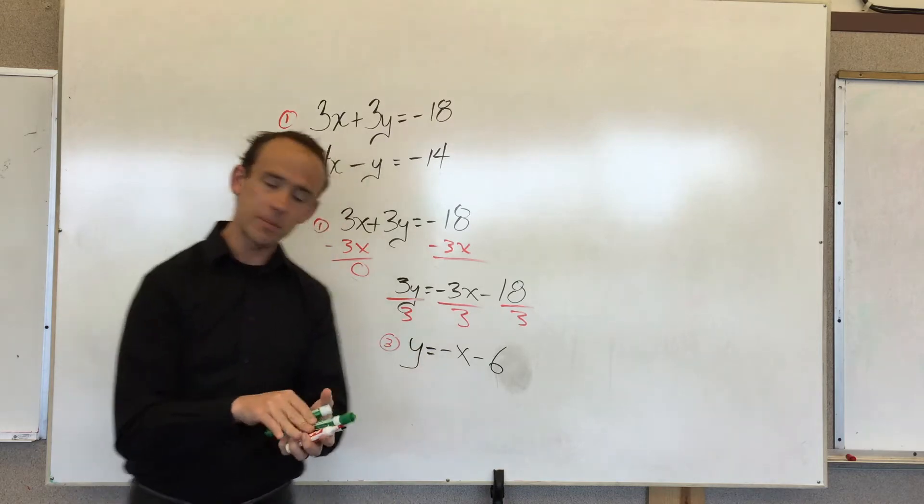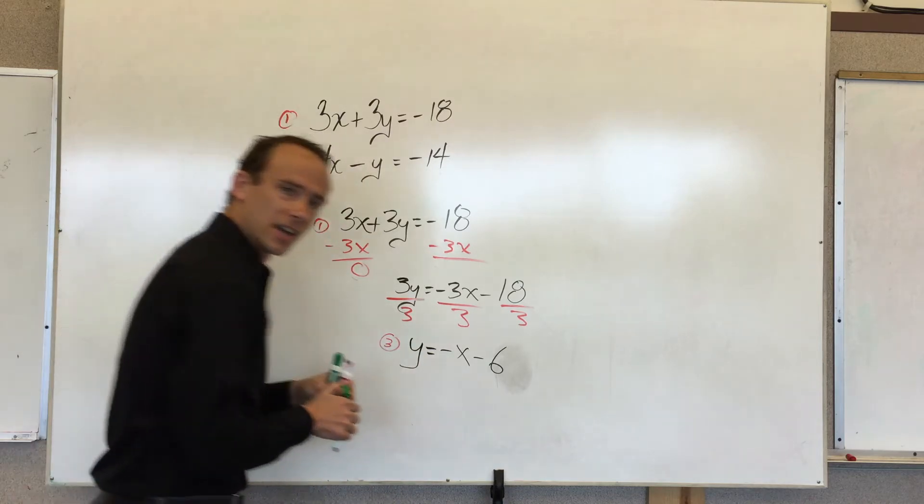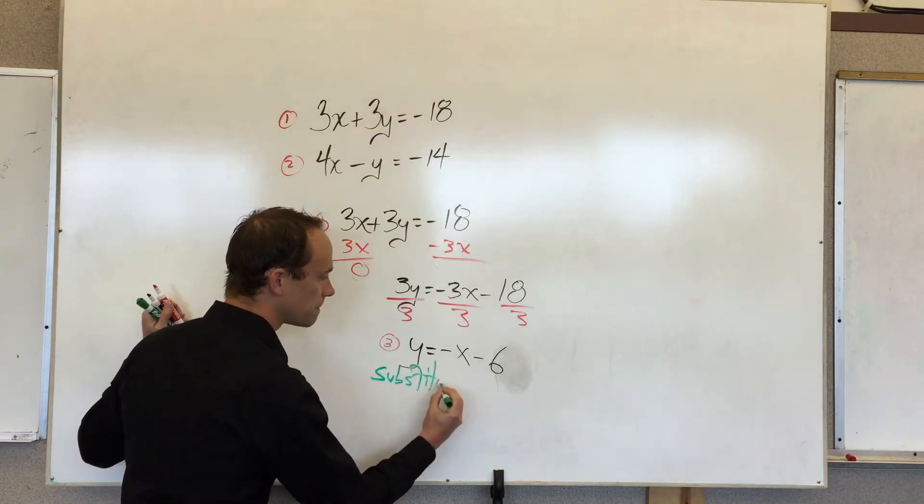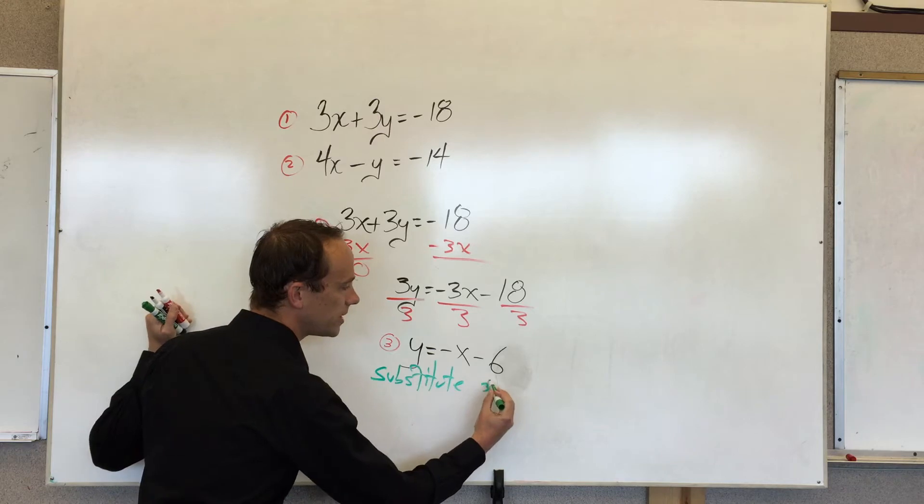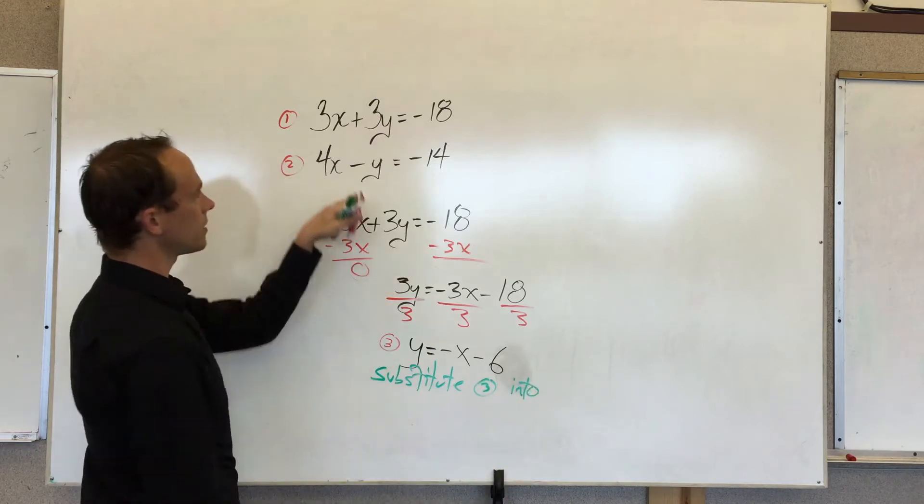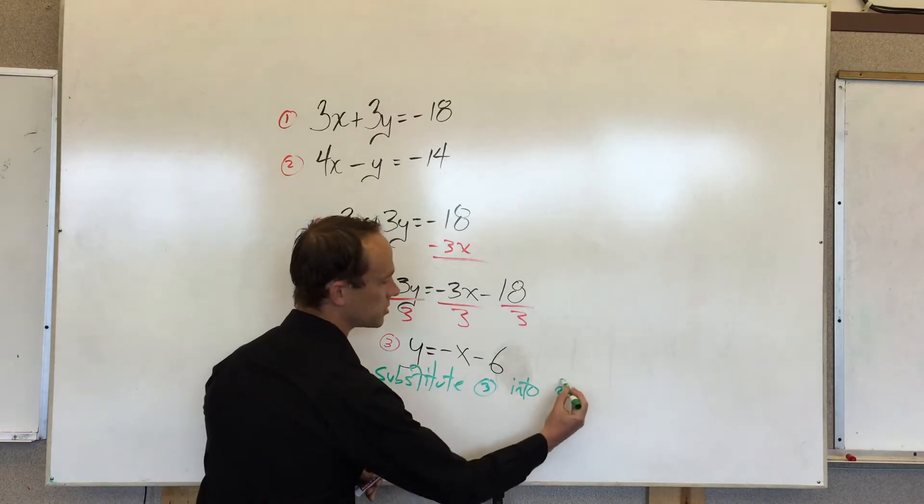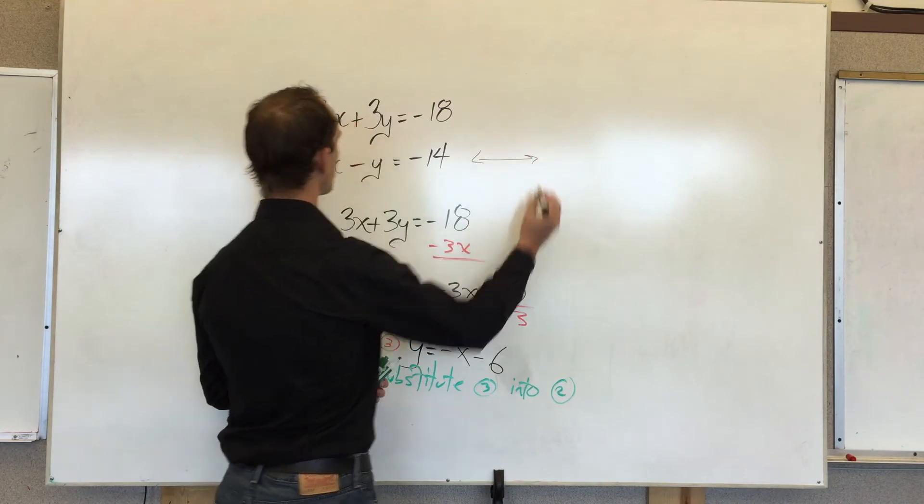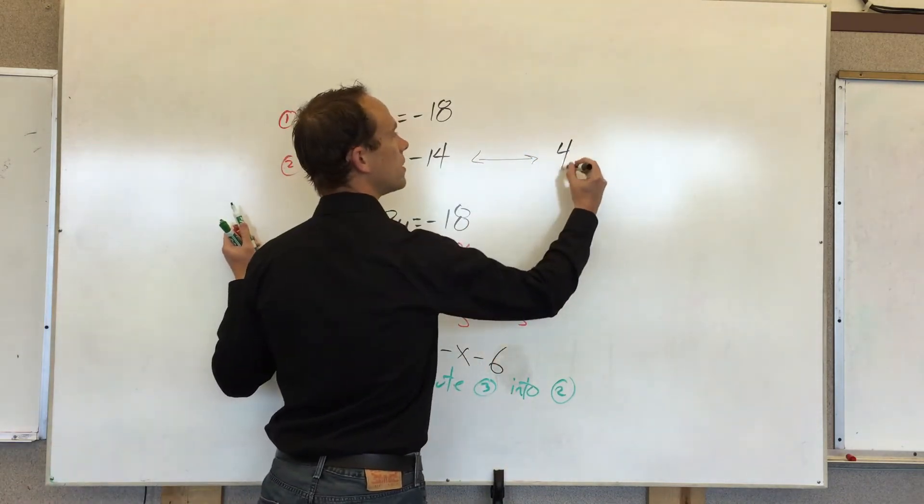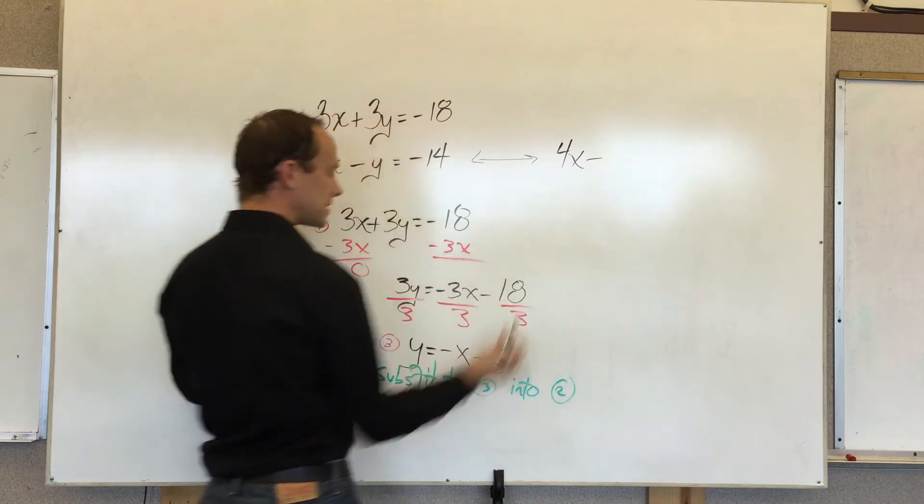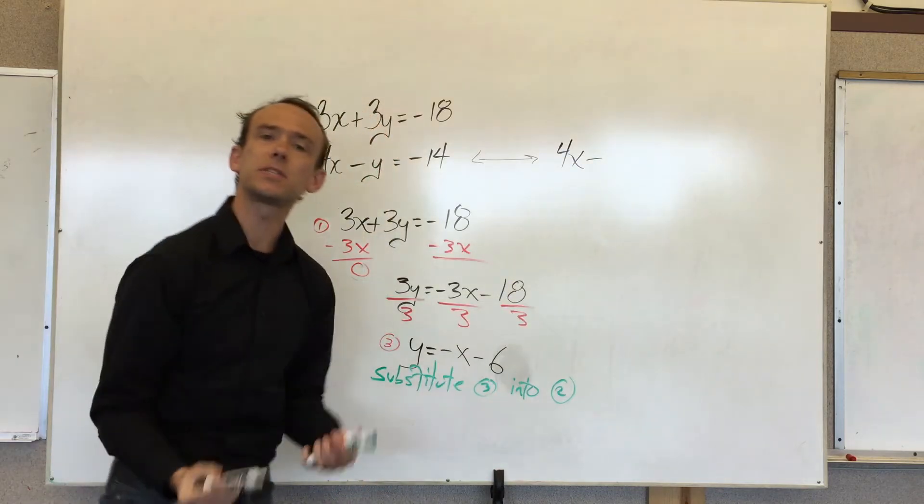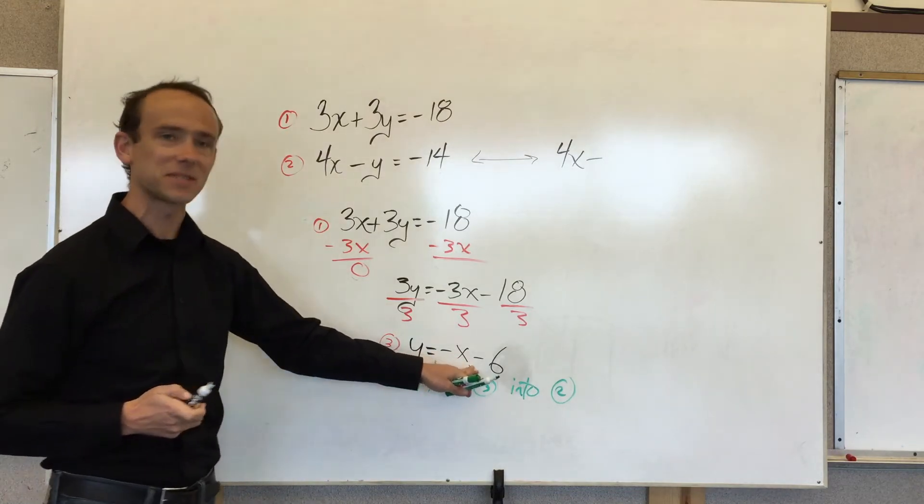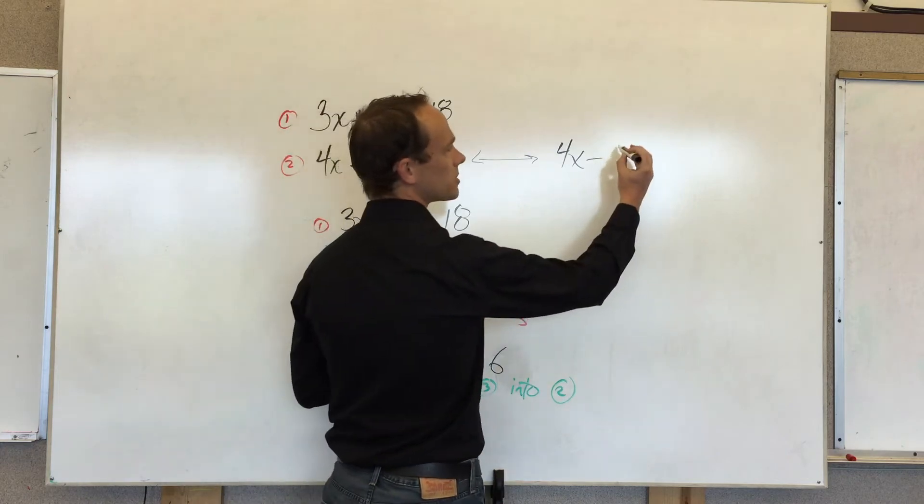And what I'm going to do now, follow me, is substitute 3 into the other equation that we didn't solve for. So substitute 3 into 2. So let's do that thing. Let's get it right here. So 4x minus, but instead of y, I'm going to substitute what I know, which is that y equals negative x minus 6. I apologize for that musical interlude.